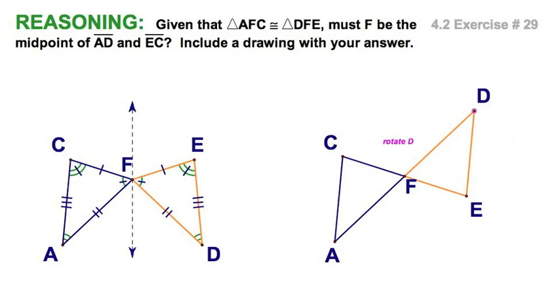And then I can put in the tick marks for the congruent sides and for the congruent angles. And in this case, I've got F is, in fact, the midpoint. I can see that C, F, and E are collinear. So it is a midpoint of EC. And I can see, again, A, F, and D being collinear.